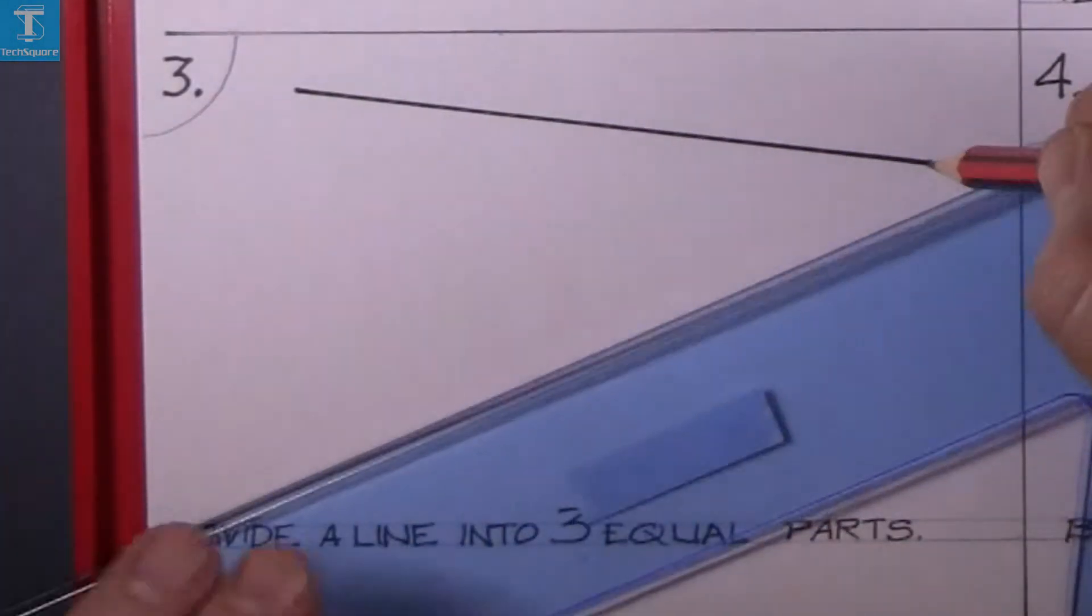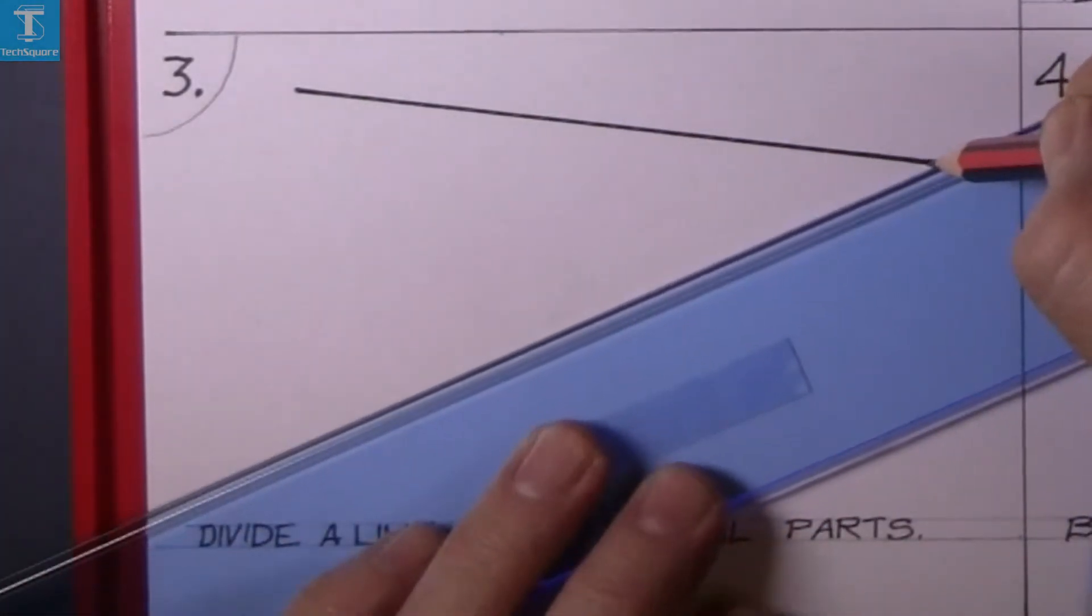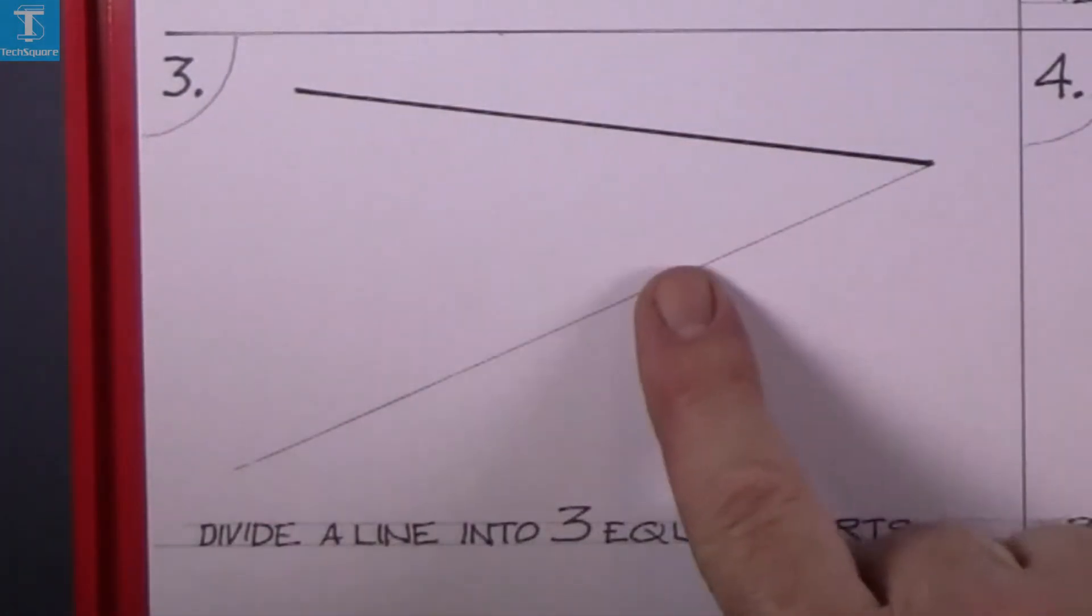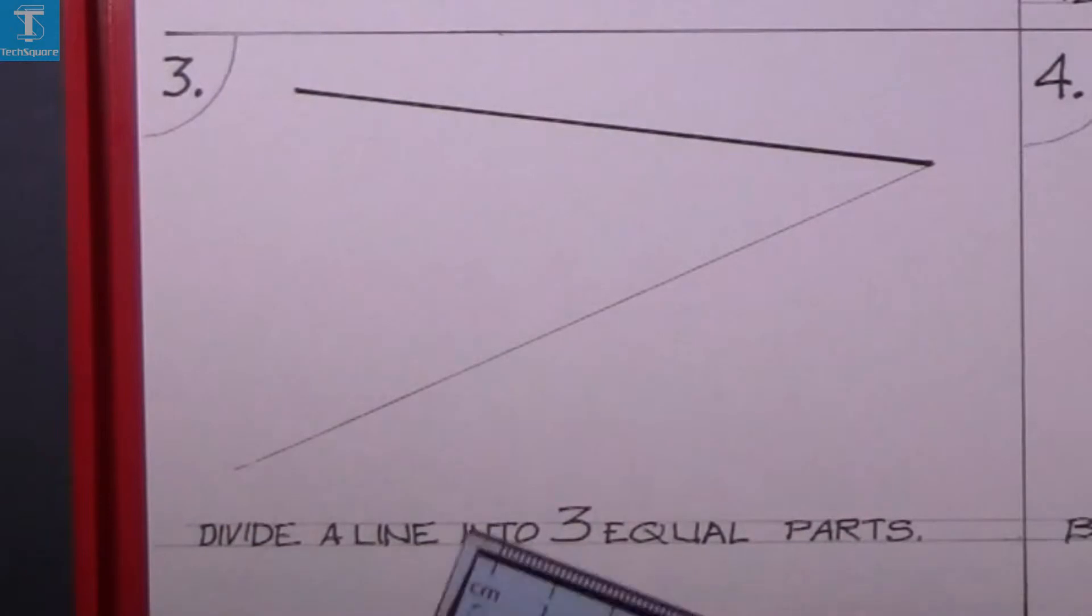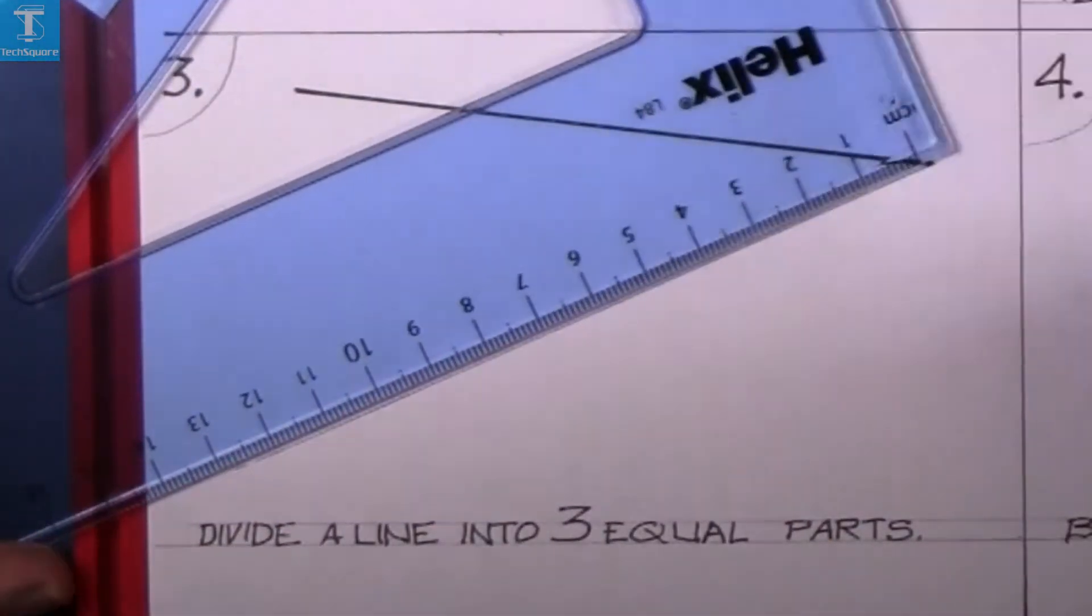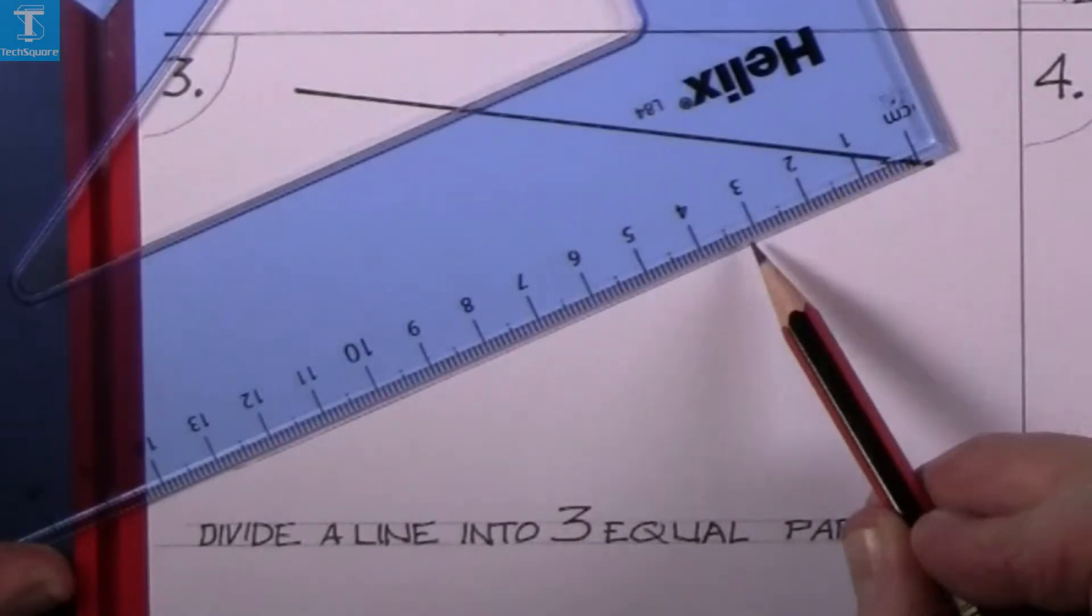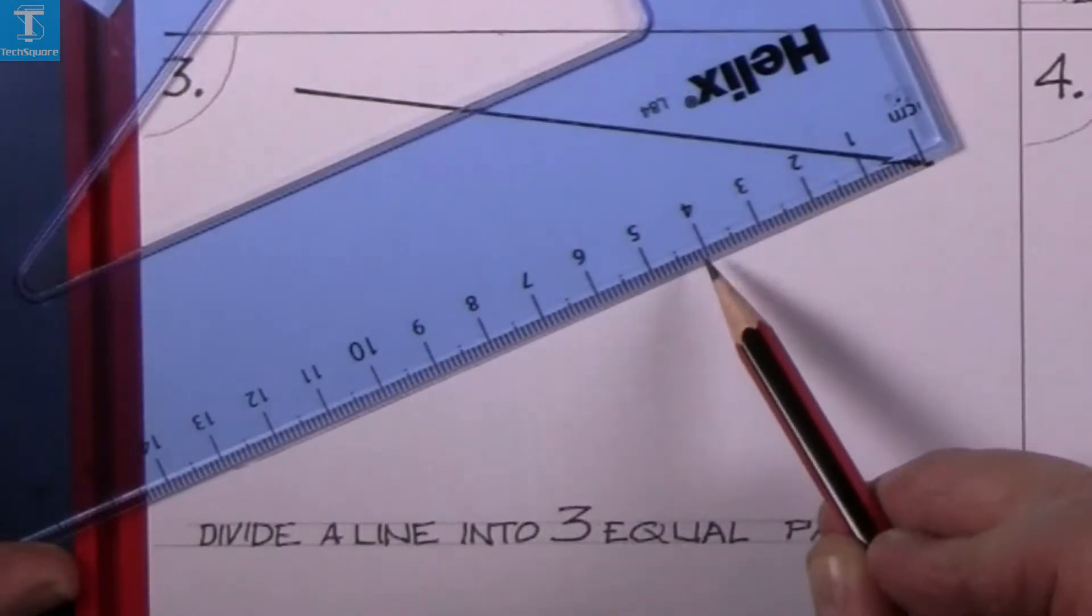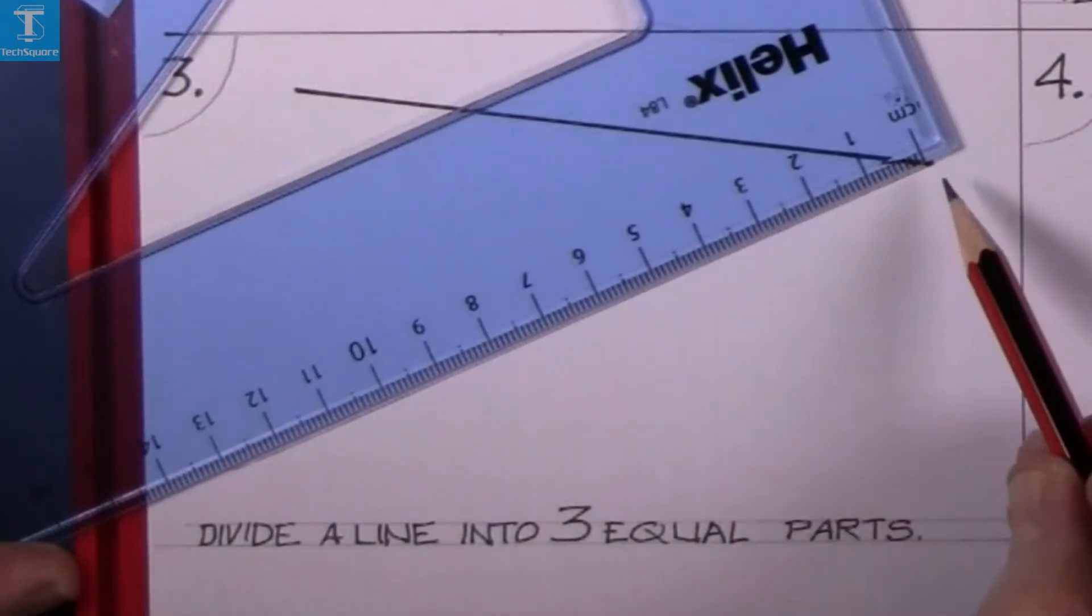So from one end of the line, it doesn't matter what end, we draw down at any angle. Step down three equal spaces along that line. So we could take 1, 2, and 3. They'd be three equal spaces. Or we can take 2, 4, 6. That's three equal spaces.